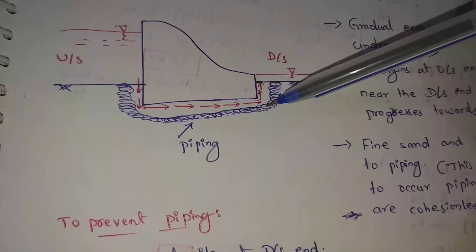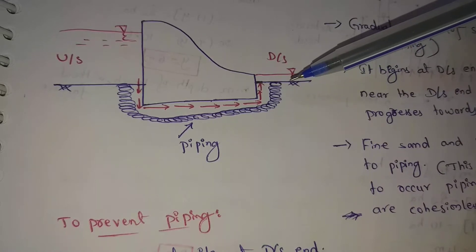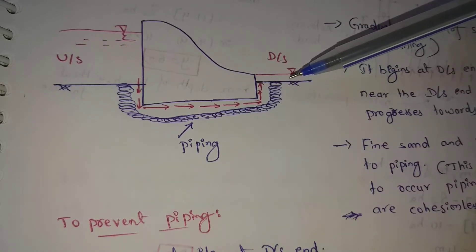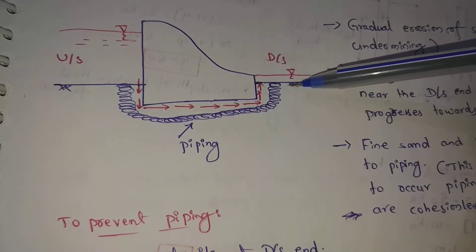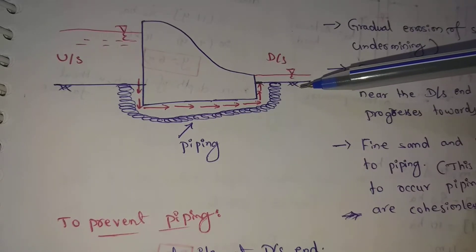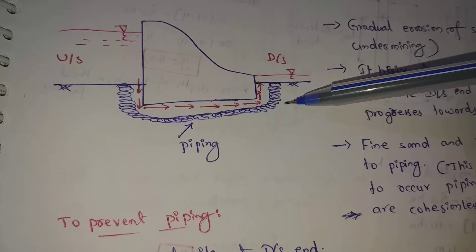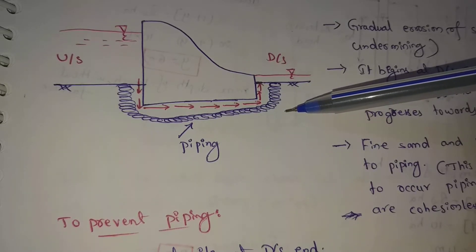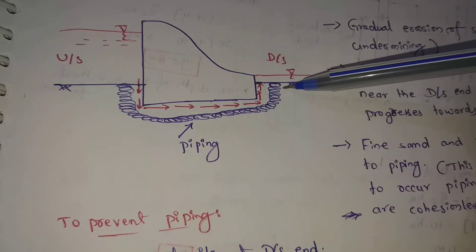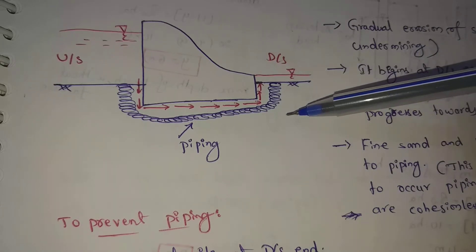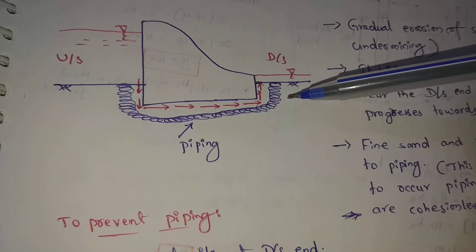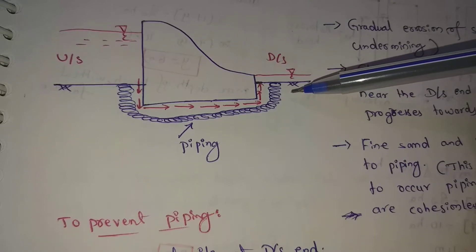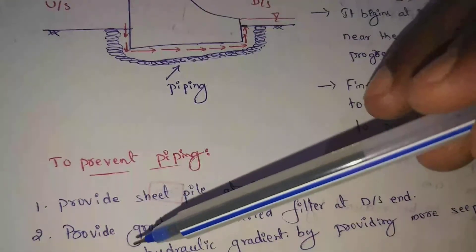Next, provide graded or inverted filters at the downstream end to control piping. Inverted filters means: on the top side we have boulders — coarse aggregates and boulders — then medium aggregates, next to fine sand. So top has large-size aggregates and the bottom side has small particles, that means fine sand. This is the inverted filter and it also prevents piping.